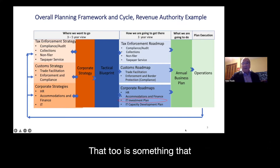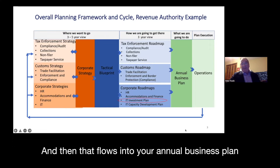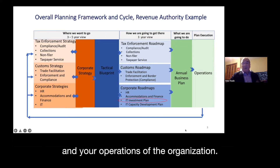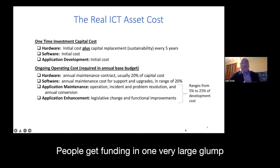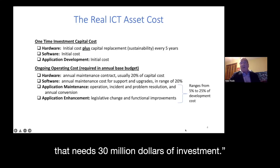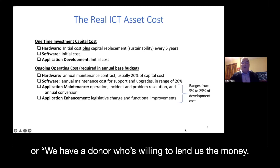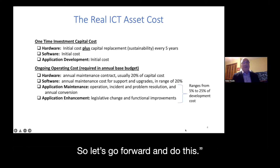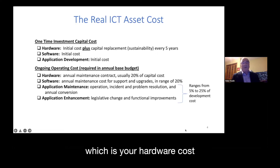That IT capacity development plan flows into your annual business plan and operations. When looking to invest in IT, people often get funding in one very large lump at the beginning of a project — for example, 30 million dollars of investment — either found in the budget or from a donor willing to lend the money. That covers the initial one-time investment cost, which includes your hardware cost.